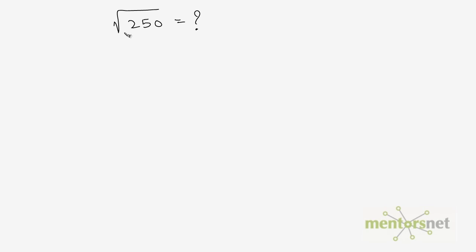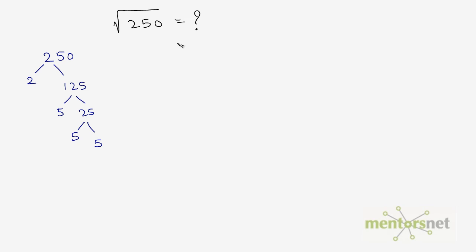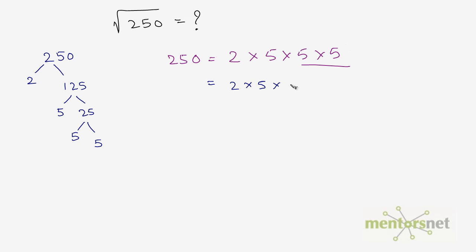Let us take another example. Let's calculate the square root of 250. So let's calculate the prime factors of 250 first. 250 is divisible by 2, so 2 times 125 is 250. Now 125 is not divisible by 3, but it is divisible by 5. So 5 times 25 is 125, and 25 is 5 times 5. So the prime factors of 250 are: 250 equals 2 times 5 times 5 times 5. Now we can group this in squares: 5 and 5 can be grouped, and 2 and the remaining 5 cannot be grouped.